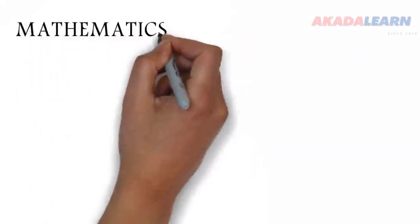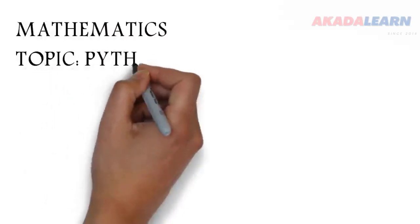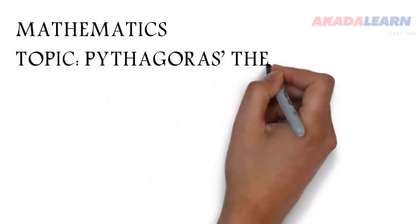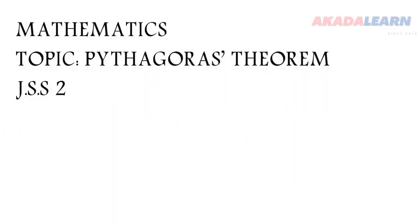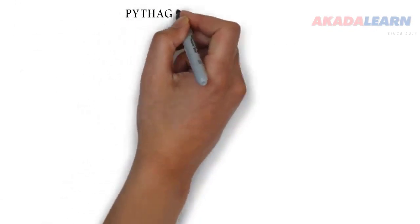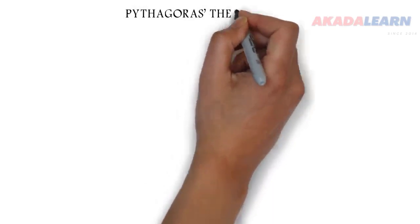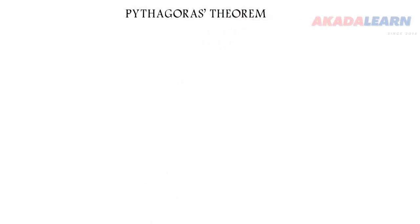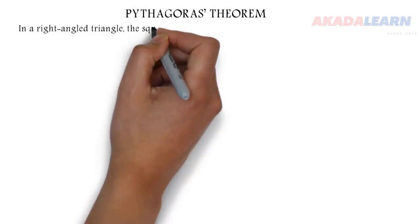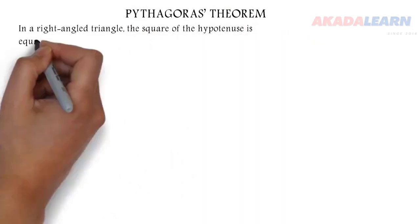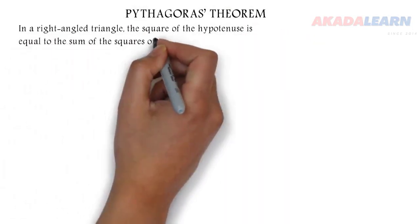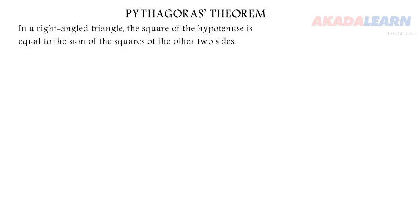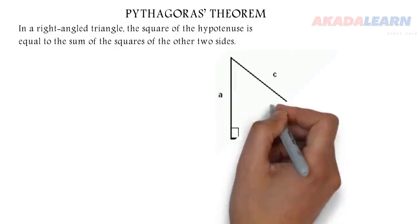Welcome to class. Today we are going to be seeing Pythagoras' theorem as it relates to right-angled triangles. First, we are going to see what the theorem states: In a right-angled triangle, the square of the hypotenuse is equal to the sum of the squares of the other two sides.